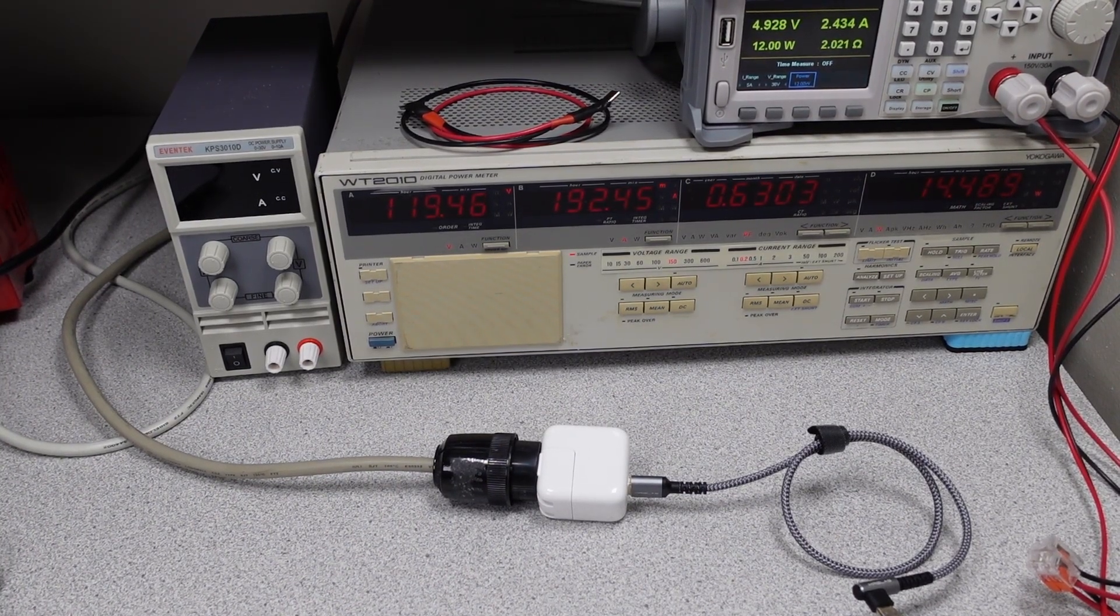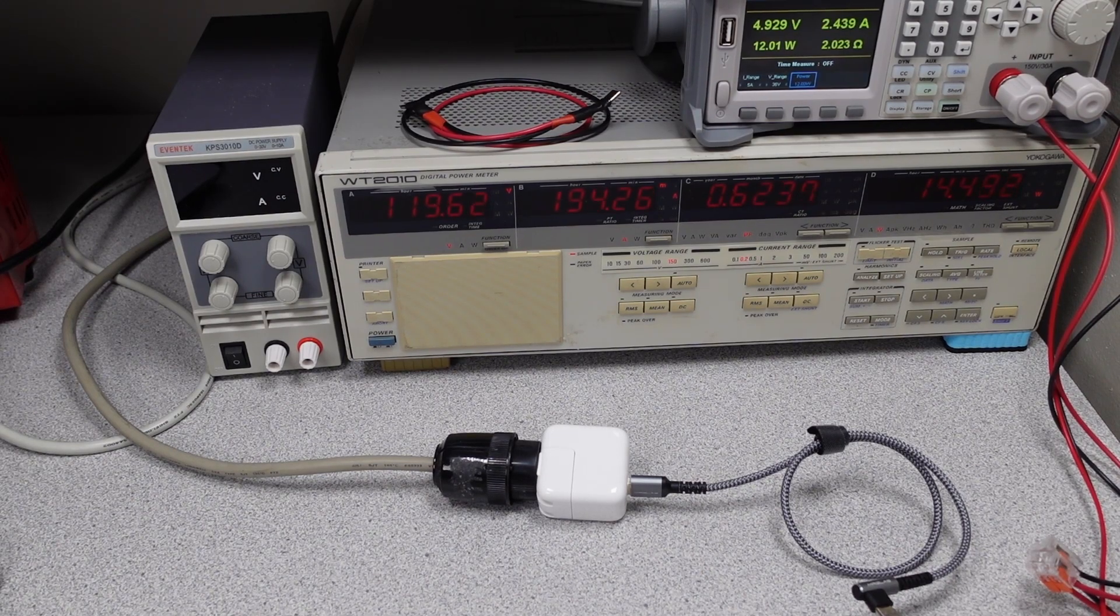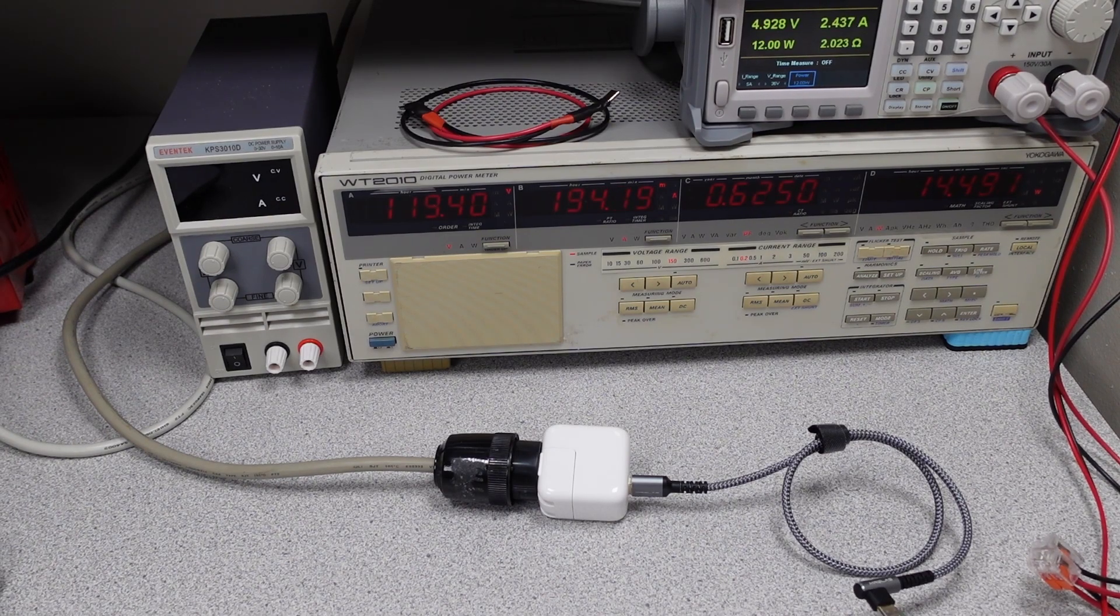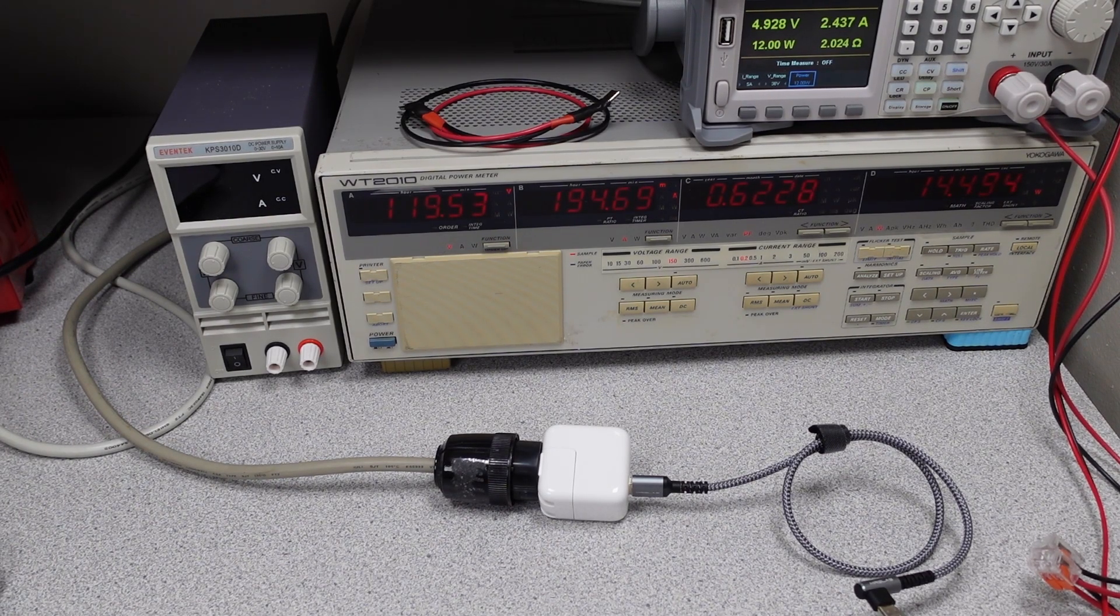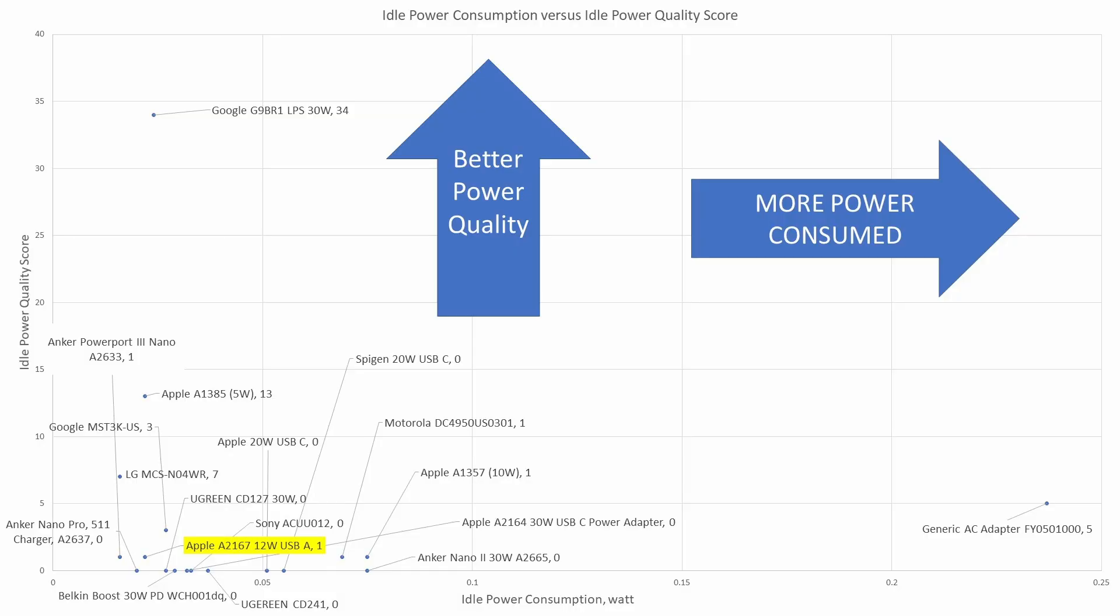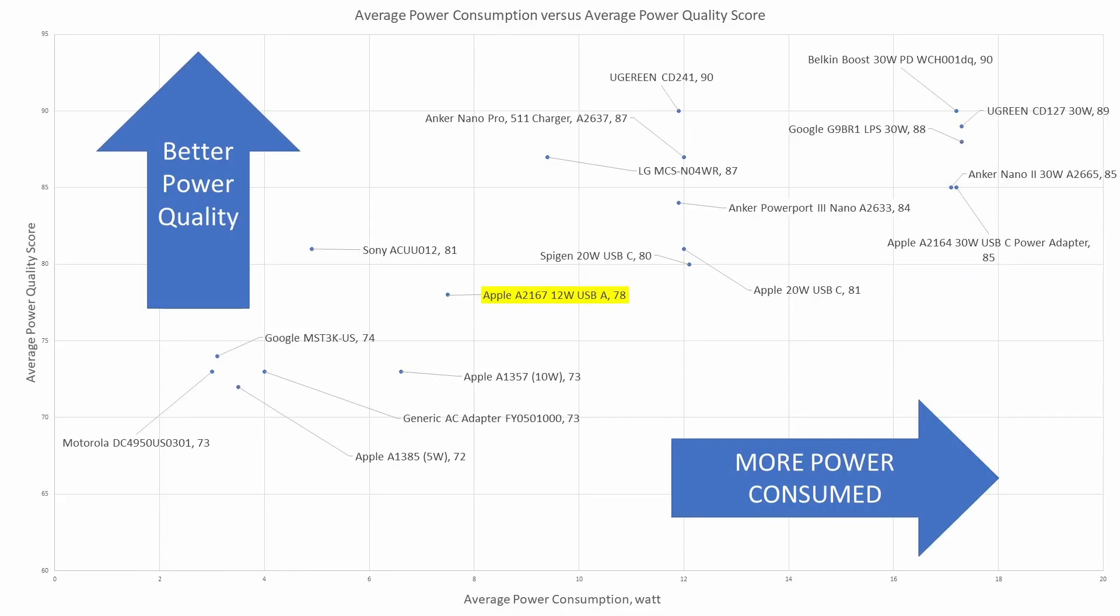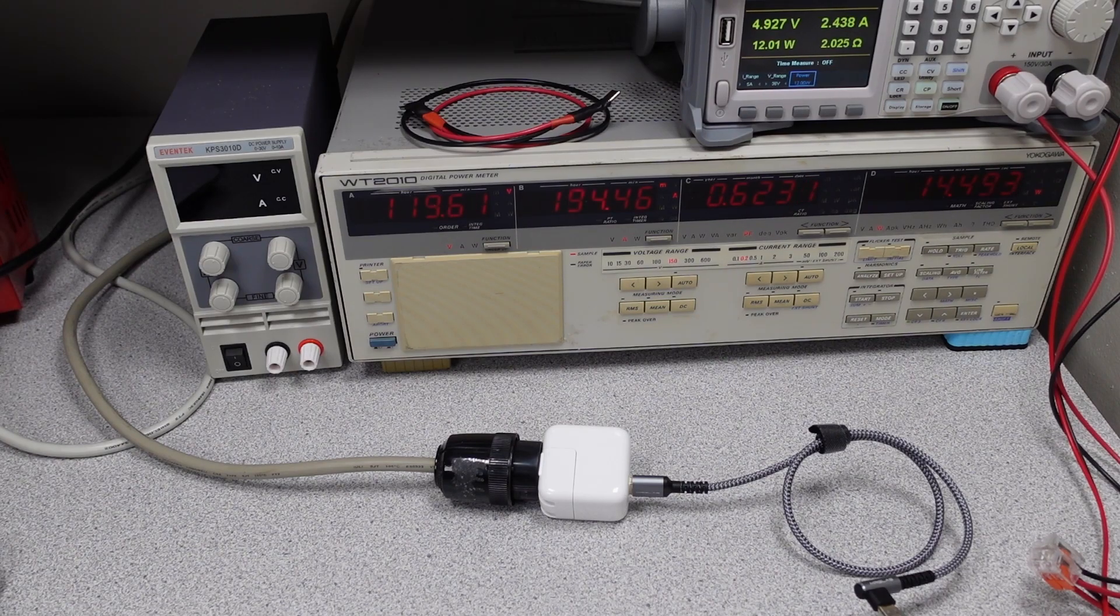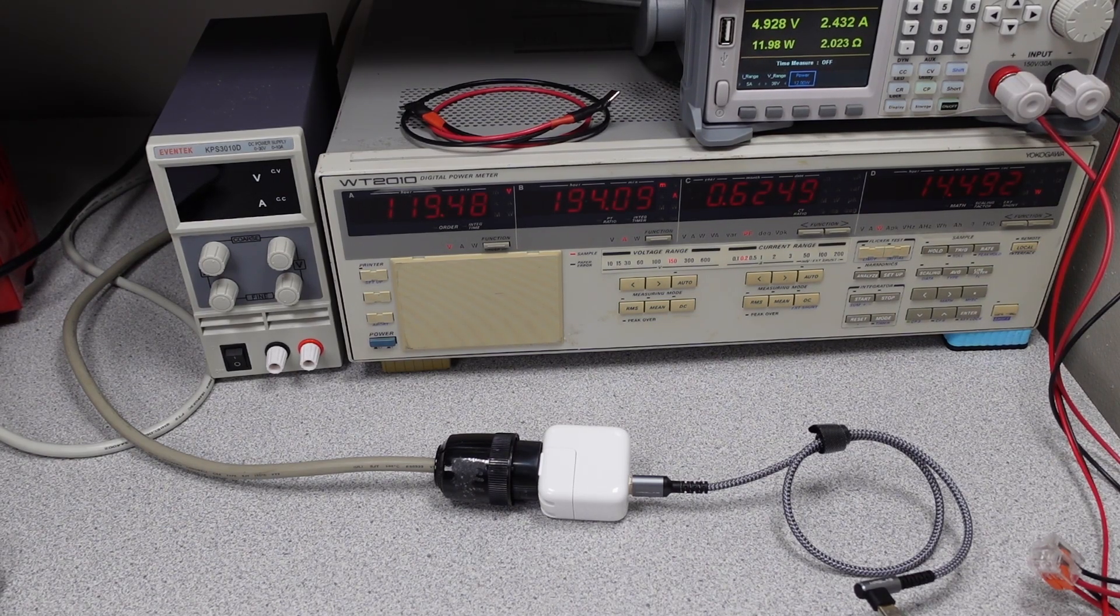I would say this is a definite skip. If you need a USB A adapter, there are other options out there. I would more likely recommend to get a USB C adapter instead. When we look at the graph for the idle, we can see that it's clustered in with the lesser devices. And when we take a look at the overall with this, we can see it's also towards the bottom. So overall, this 12 watt USB A power adapter from Apple does not get the recommendation from me.